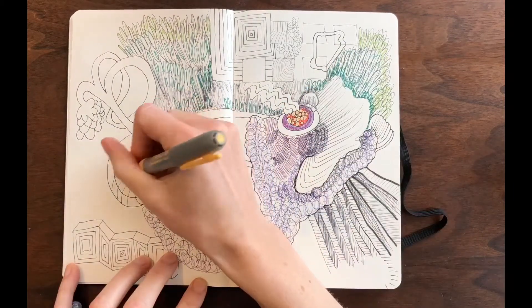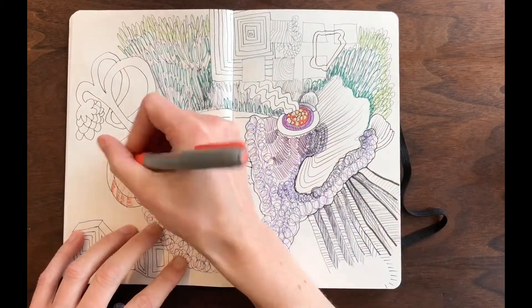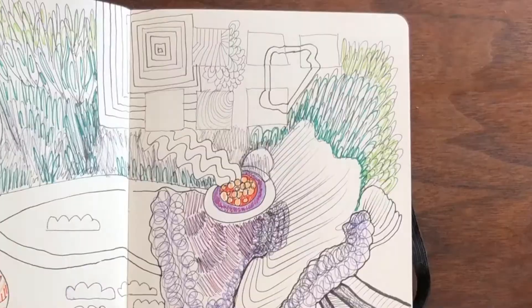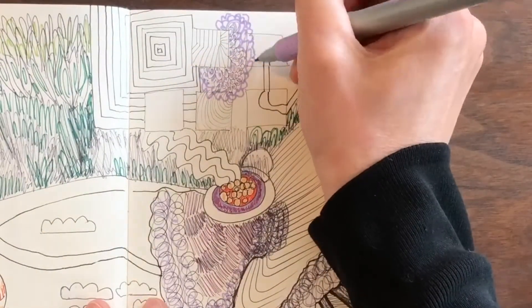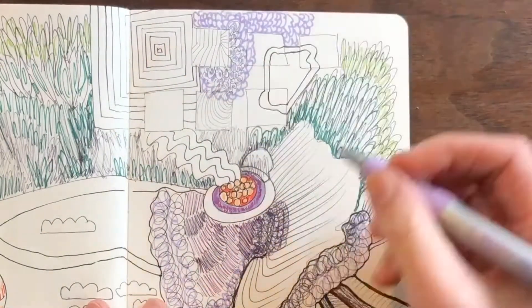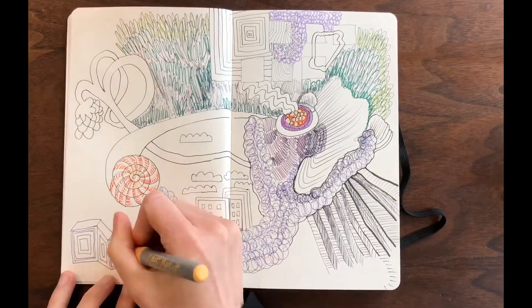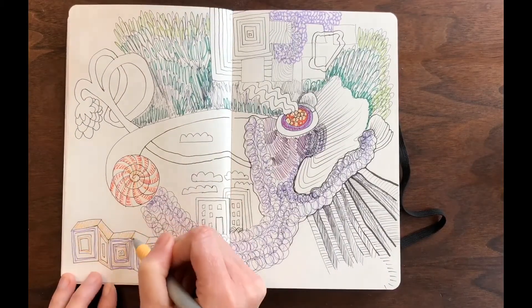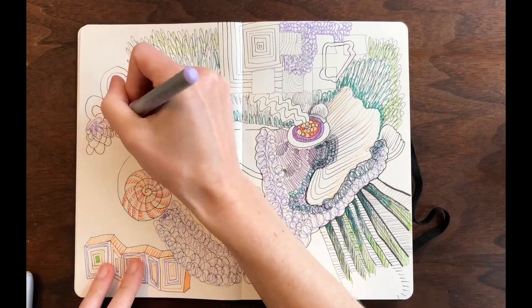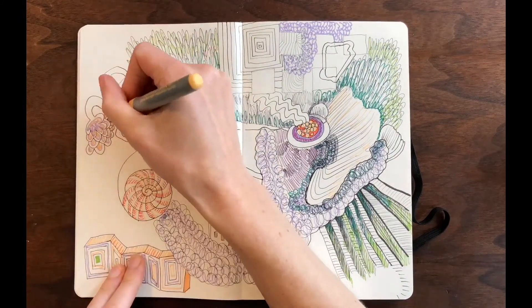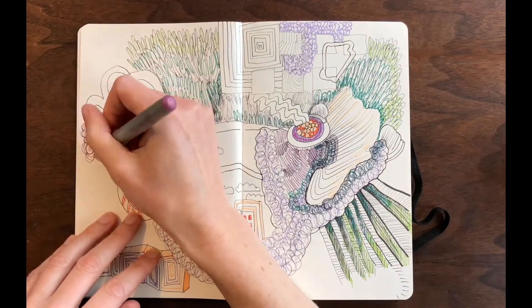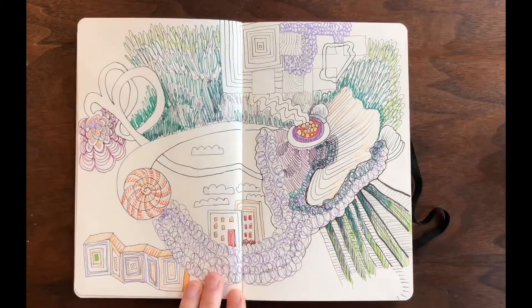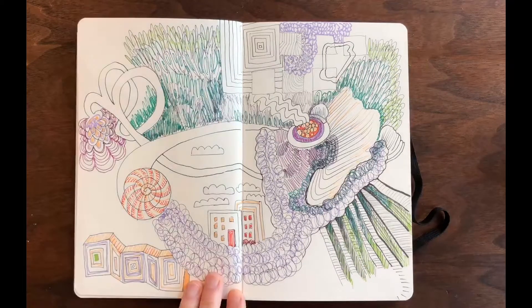This doodle is mostly abstract. Abstract art does not try to look like something realistic. Things that are abstract might remind you of things that you recognize. You might see something in my doodle that reminds you of a snail or a flower or a city but they don't look very realistic. A doodle could just be marks or you could draw things that are representational that look like something else.